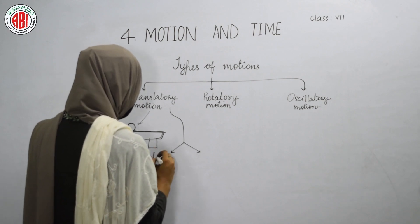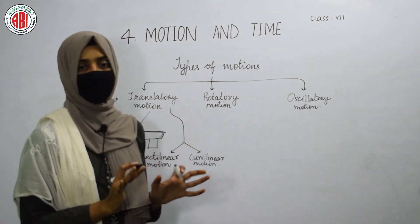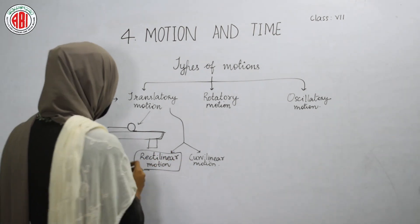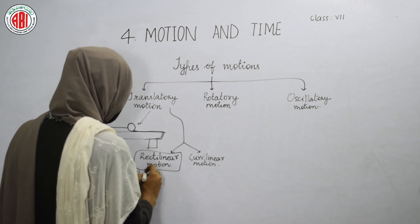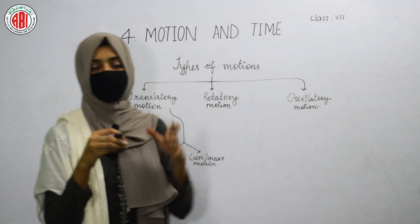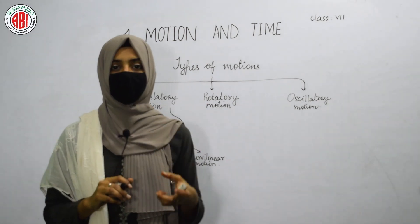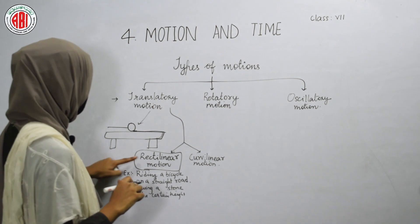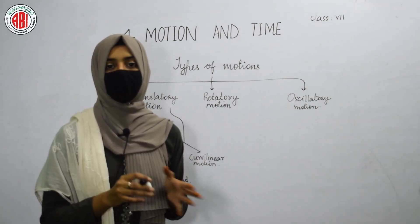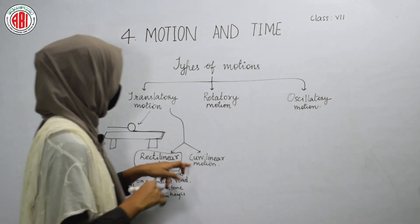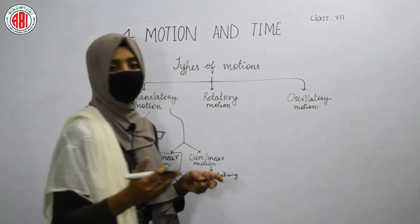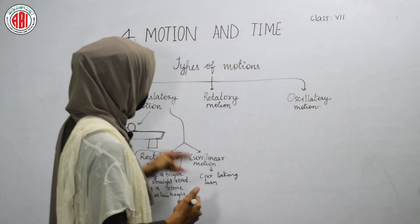Translatory motion is of two types: rectilinear motion and curvilinear motion. If an object moves along a straight line, that translatory motion is called rectilinear motion — for example, riding a bicycle on a straight road, or throwing a stone from a height so it moves in a straight line. Curvilinear motion is when an object in translatory motion moves along a curved path — for example, a car taking a turn on the road moves along a curved path.